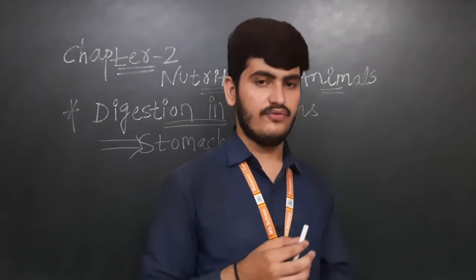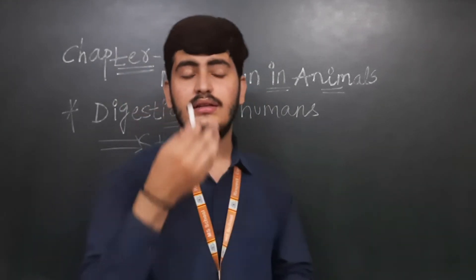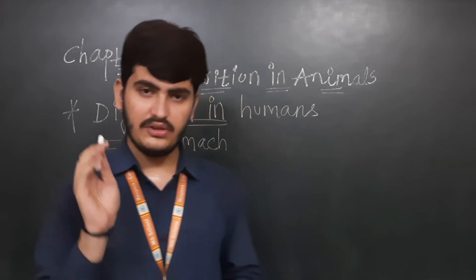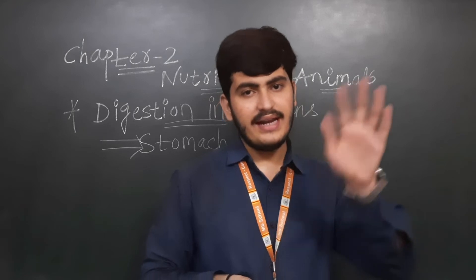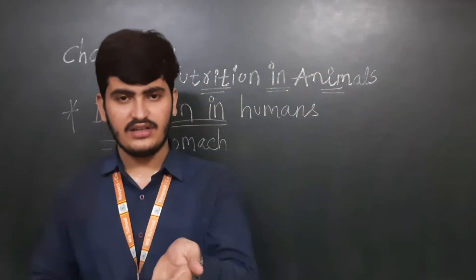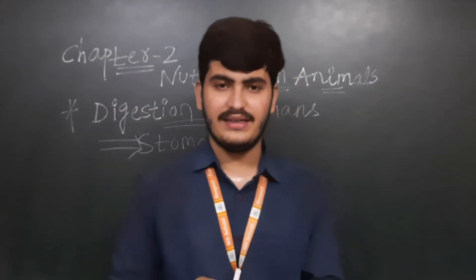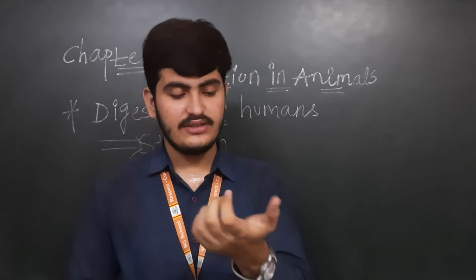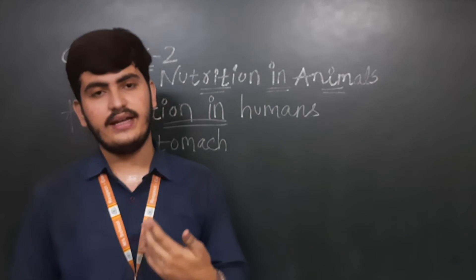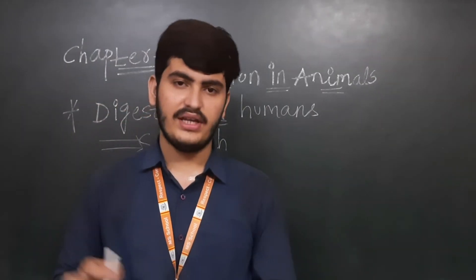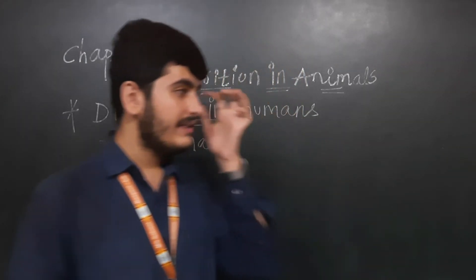The stomach receives food from the esophagus — the food pipe. The food you eat goes into the food pipe, and from the food pipe it goes into the stomach. The stomach then passes the food to the small intestine. So it is a chain-line process: from the mouth it goes to the esophagus, from the esophagus to the stomach, and the stomach gives it to the small intestine.